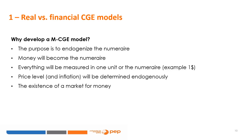In developing a monetary or financial CGE model, the purpose is to endogenize the numeraire that we need to arbitrarily choose in a real CGE. Money will become the numeraire, and everything will be measured in one unit of the numeraire — for example, one dollar. The price level will be determined within the model, meaning there will be a market for money. Depending on demand and supply, the value of the numeraire will change with respect to the value of goods. The value of money is one divided by the price index, and inflation is simply a reduction in the value of the numeraire.